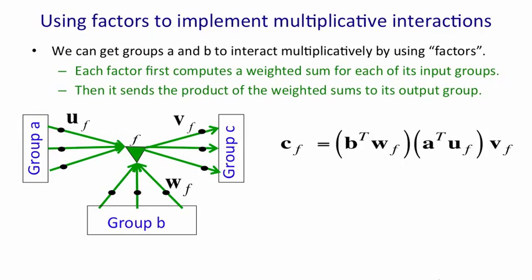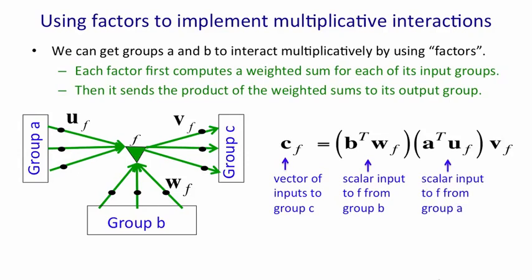We can write that as an equation. The input that factor F provides to group C, so its vector input to group C, is a scalar input to F from group B that's got by multiplying the state of group B by the weights W_F, times a scalar input to F from group A that's got by multiplying the state of group A by the weights U. We then take the product of those two scalars and multiply the weight vector V_F by that, and that's the input that the factor gives to group C.